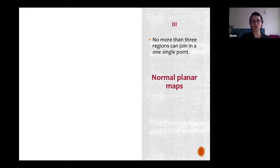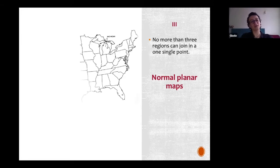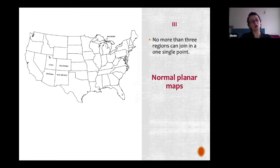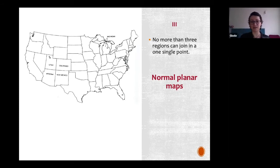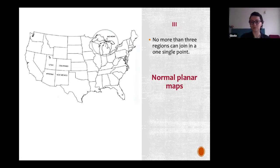Also, you cannot have — like on the map of the United States — a configuration with four regions touching together at a single point, like Utah, Colorado, Arizona, and New Mexico. In normal maps, you will not have this kind of configuration. The map of the United States is not normal because of this condition, and also because Michigan is split into two regions.